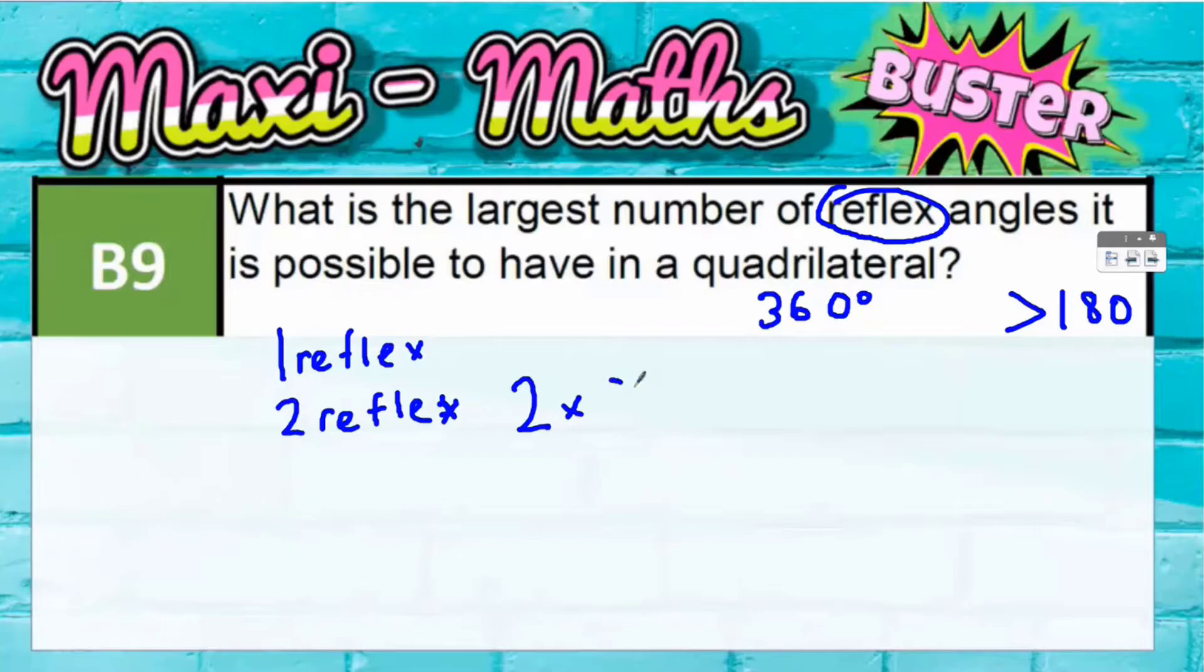And if you've got two angles, even if they were just both 181 degrees, one degree over each, then that means you would end up with 362 degrees, and that can't possibly happen.